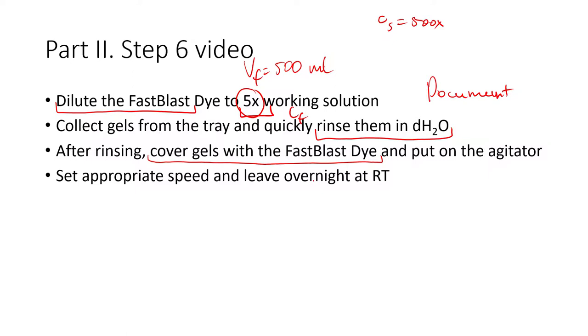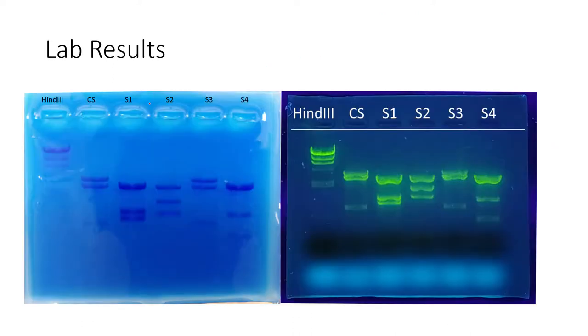You should cover your gels with the fast blast dye otherwise they will easily dry out and you will not be able to take a picture of these gels. You usually put it on the agitator or the shaker. You leave it overnight. After you put it on this shaker you should set the appropriate speed because if it's too much the fast blast will be spilled from your gel holders and they will dry out so be careful with the speed of the shaking.